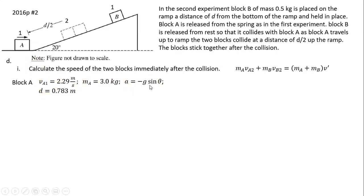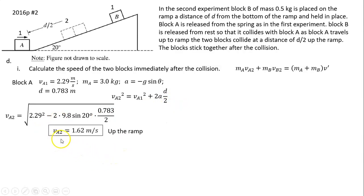Substitute everything in. This is negative because acceleration is negative—the block is slowing down. So the speed of block A right before collision is 1.62 m/s and its direction is up the ramp.